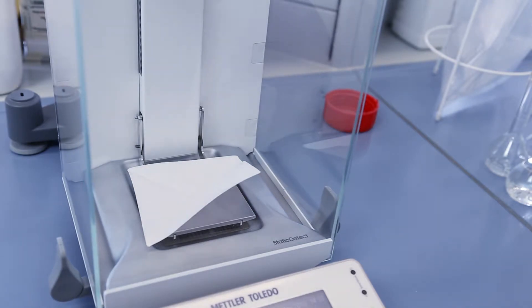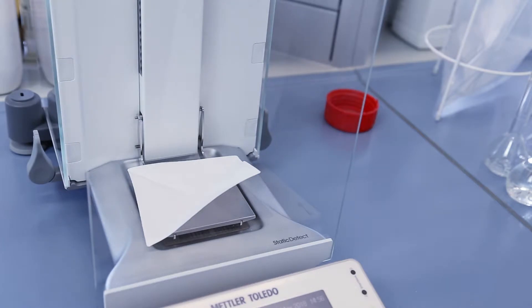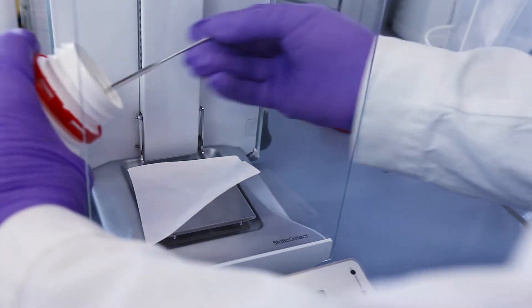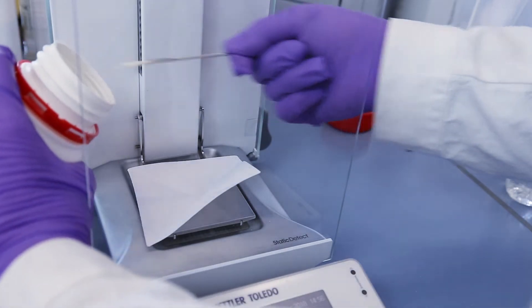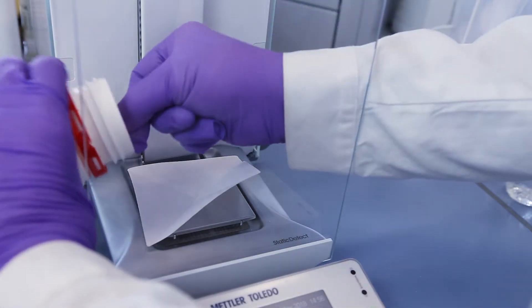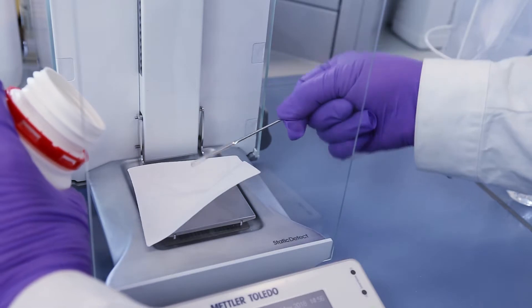The first step is to weigh in a milligram quantity of powder onto a weighing paper. This is a tricky process, not only because of the small sample size, but because of possible turbulence in the weighing chamber and the likelihood of static charges.